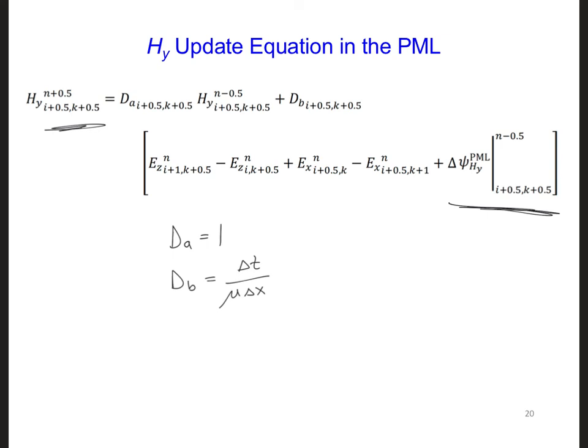This type of PML that we developed is called a uniaxial PML. It came about after the split field PML. The word uniaxial comes from the fact that it doesn't require field splitting. A more advanced formulation of UPML can be developed that can absorb evanescent waves more easily, and that can also absorb lower frequencies better. But this UPML is good enough for our purposes. Next time we will look into how to implement this PML on the right side of our two-dimensional FDTD model.